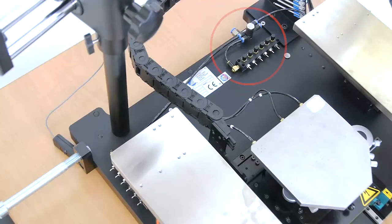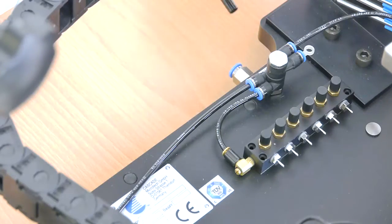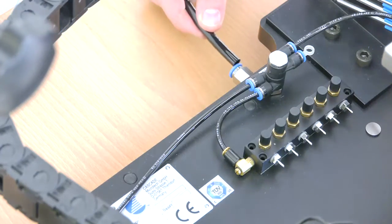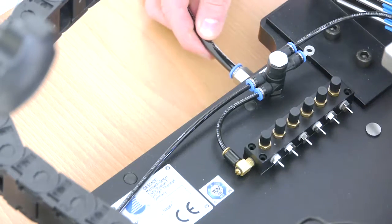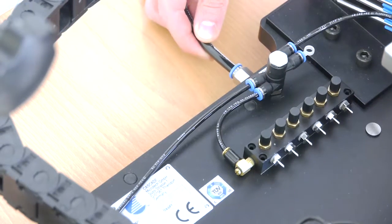For the compressed air connection, put the 8mm diameter hose to the fitting on the stage. If necessary, use the supplied hose to hose adapters appropriate to your air source.